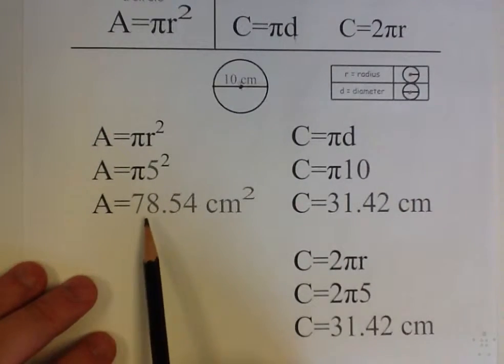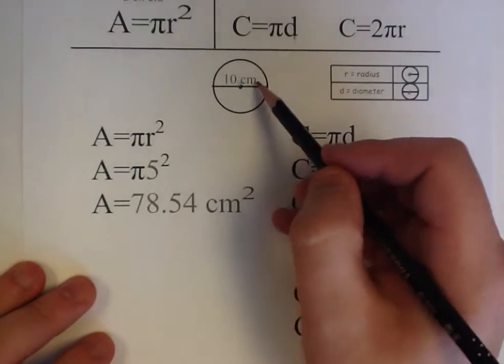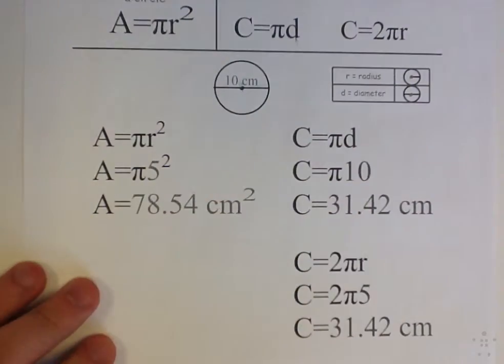I would write A equals 78.54. My label would be centimeters squared because I'm finding area.